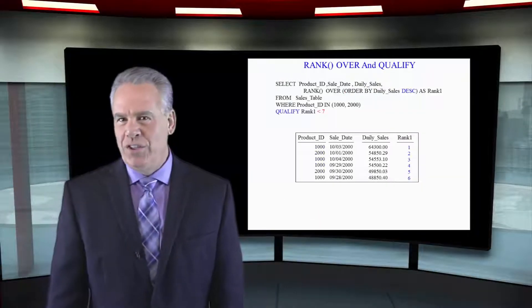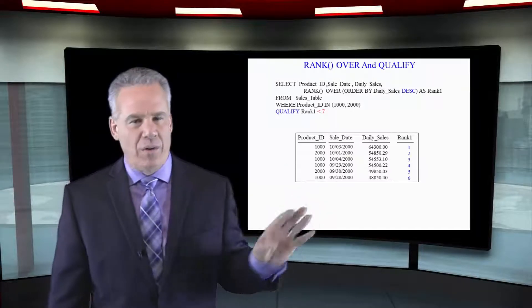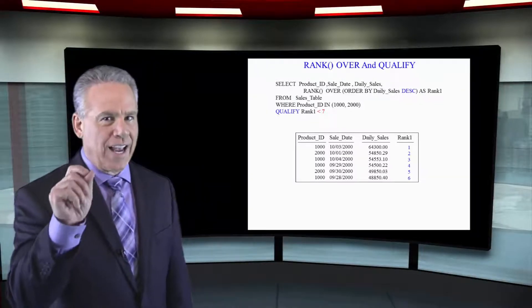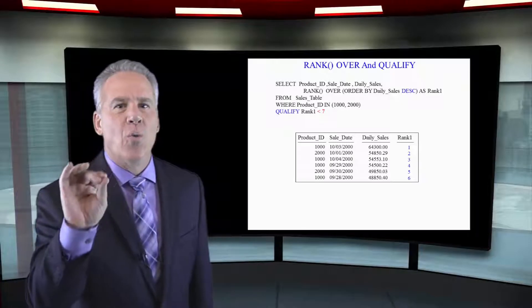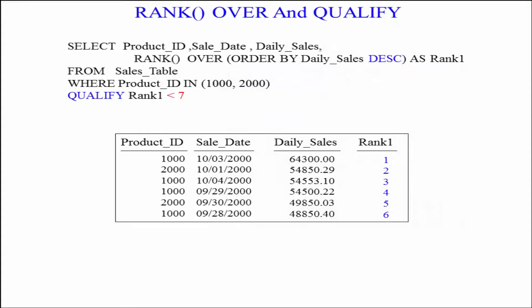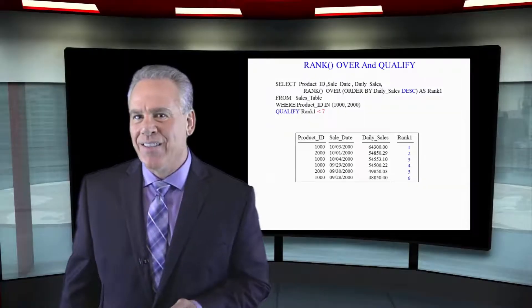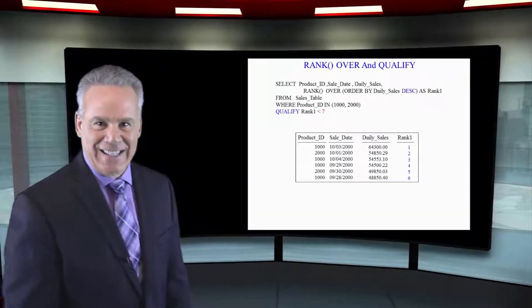We just saw the partition statement. Now I want to introduce a very exciting keyword, and that is QUALIFY. We're going to use RANK() OVER, order by daily sales descending, to get all our daily sales. Notice the qualify statement — we're going to qualify the ranking less than seven, and that's going to limit the totals coming back. You will now see the top six ranking daily sales.